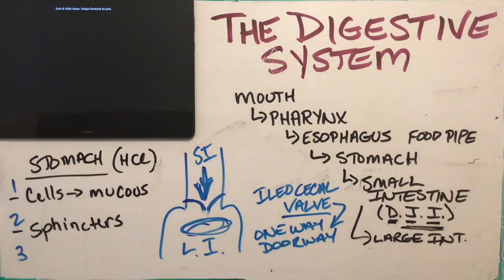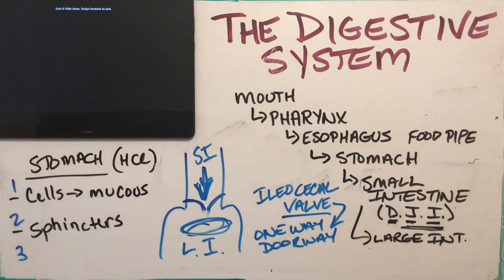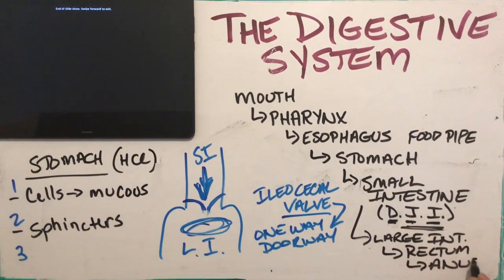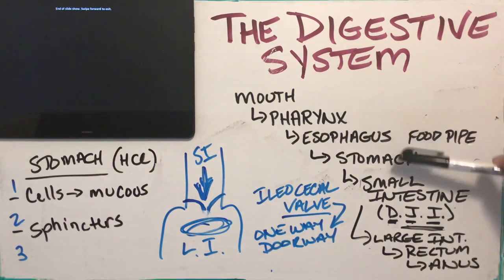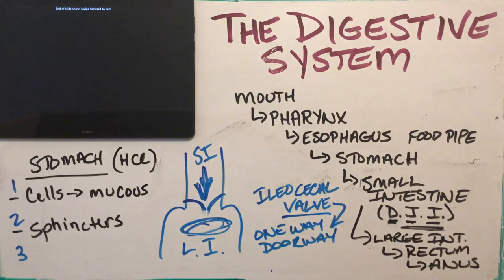That's it for now — there will be more tomorrow for the second part of the digestive system. Have your diagram ready for tomorrow. If there are any questions, comments, or concerns, put them in the comments section underneath this video or go to the Edsby page for the class. To complete our arrow diagram: mouth, pharynx, esophagus, stomach, small intestine, large intestine, rectum, anus — that's the order food travels through the digestive system.